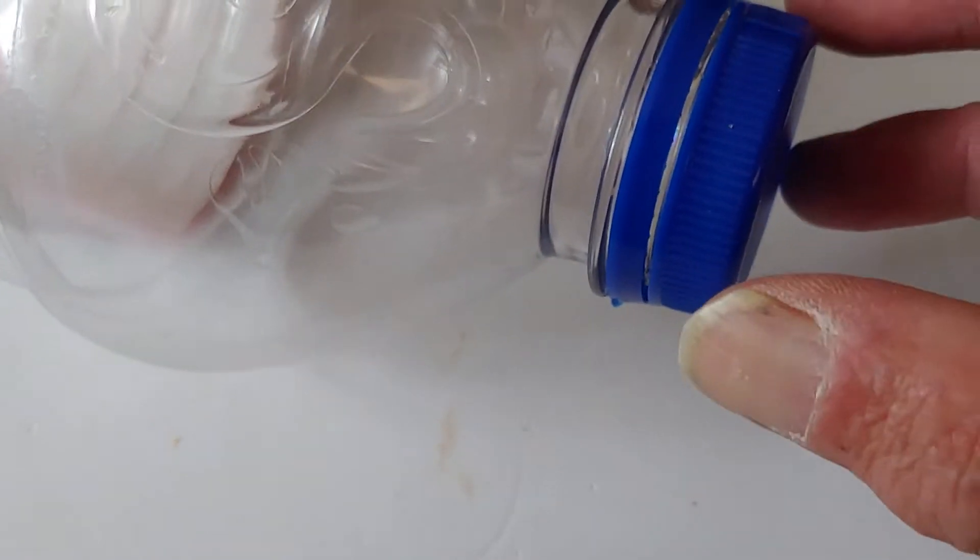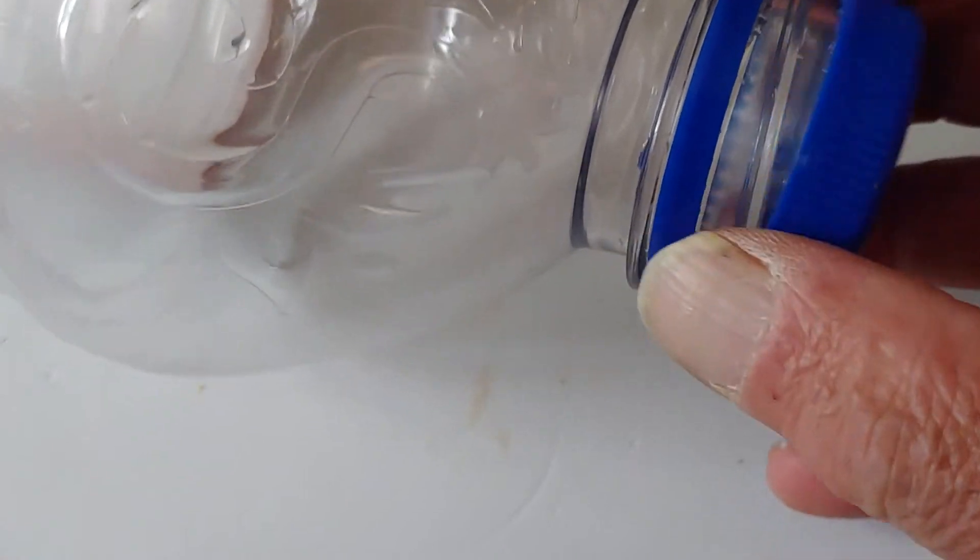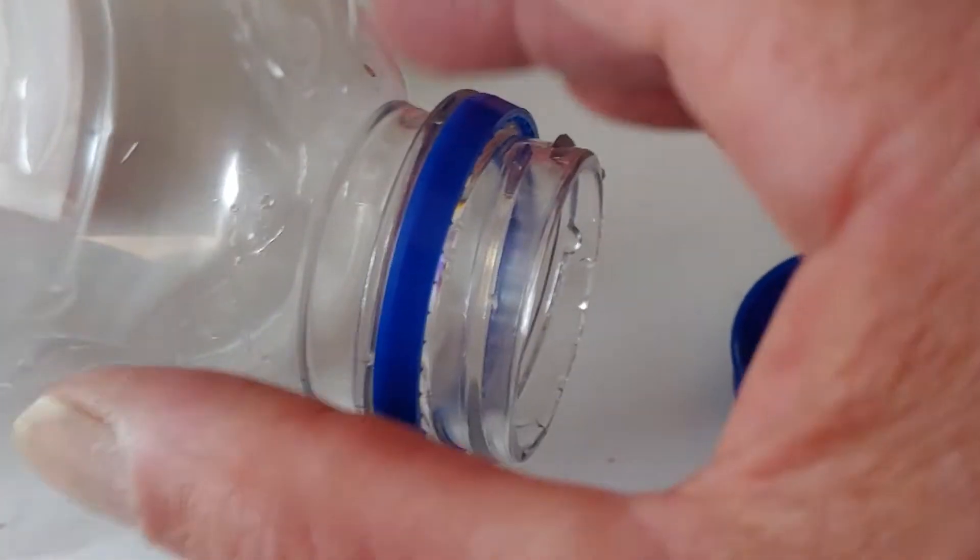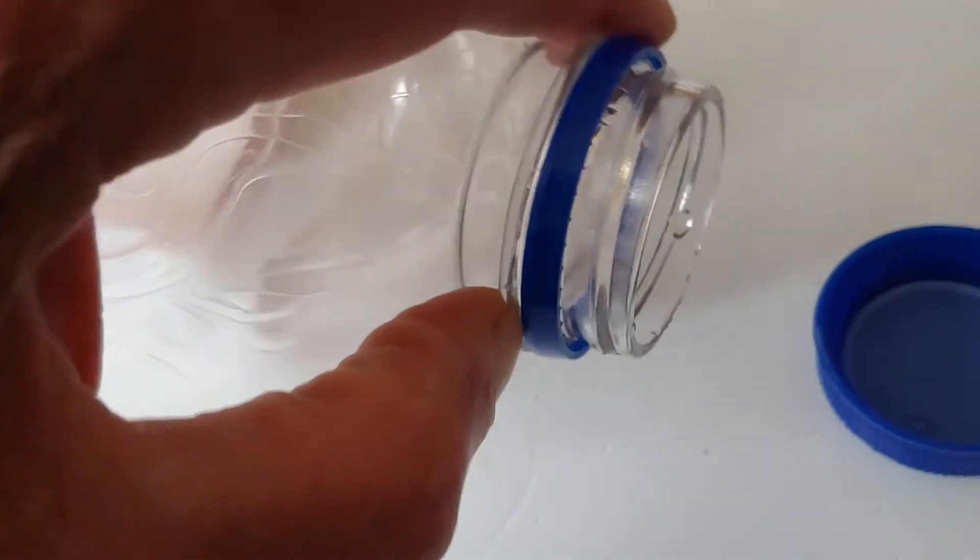Now when you turn the lid, you break this seal, which allows the product to be dispensed. In order to use this over again, you pry this part off.